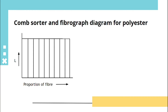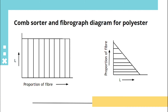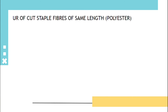This is a comb sorter diagram for polyester. It is rectangular shaped because all fibers have the same length. This is a fiber graph diagram for polyester — when the axes are reversed, it gives a triangular shaped fiber graph diagram.